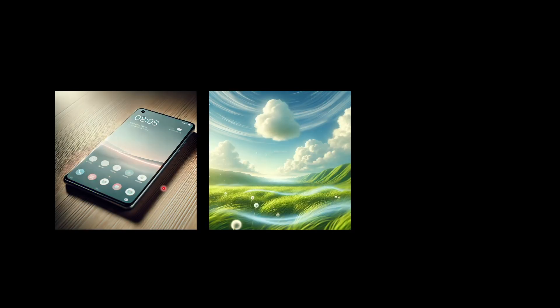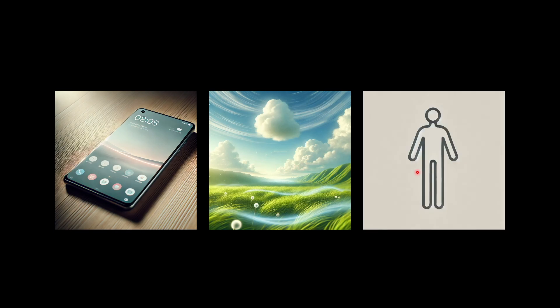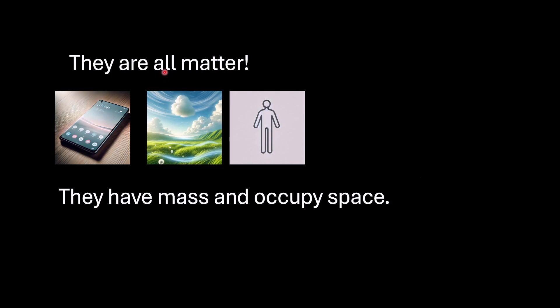The device on which you are watching this video, the air surrounding it, and your own body — what do you think is common between them? All three have certain mass and they occupy space, so we can say that they are all matter. From our earlier classes, we are already aware of what matter is and how we classify it. We also know that different states of matter are interconvertible. Before we dive into the model concept chapter, let's quickly refresh these basics.